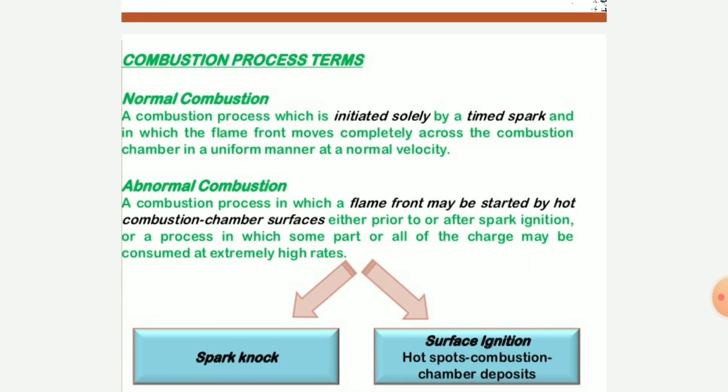A combustion process which is initiated solely by the timed spark and where the flame front moves completely across the combustion chamber in a uniform manner at normal velocity is called normal combustion. Abnormal combustion is a combustion process in which the flame front may be started by the combustion chamber surface prior to or after the spark ignition.